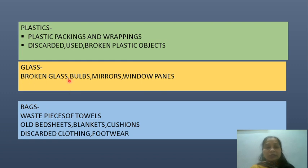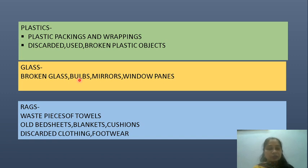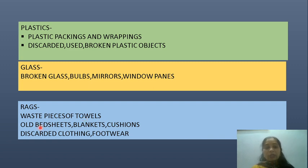Then we have glass waste: broken glass, used bulbs that have broken, and broken window panes which we can no longer use and discard. Then rags — waste pieces of towels and worn-out cloth we throw away — become waste called rags. Also old bedsheets, blankets, cushions, discarded clothing, and footwear fall under this category.